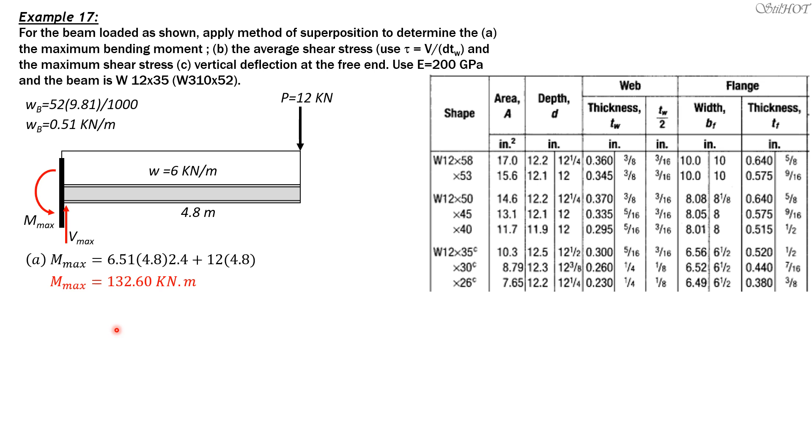Then the maximum shear, which we need to compute to substitute in this formula here, is 6.51 times 4.8 plus 12. So the maximum shear equals 43.25 kilonewtons or 43,250 newtons.